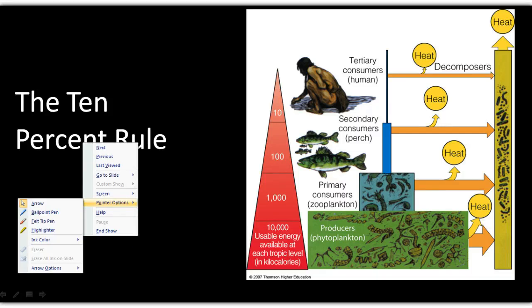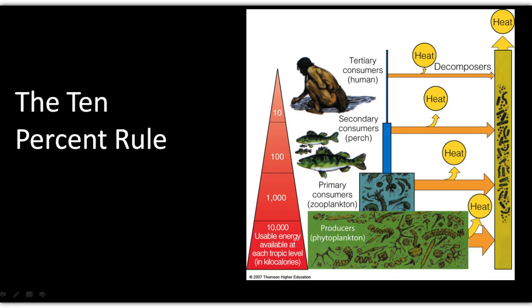This is the third lecture for Chapter 3, and we're going to start off looking at the 10% rule, which is about energy. What it points out is that the amount of energy diminishes every level of the food chain we go up. So the closer you eat to the bottom of the food chain, the more conserving you're doing as far as energy goes.